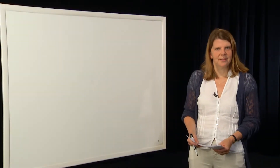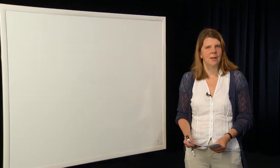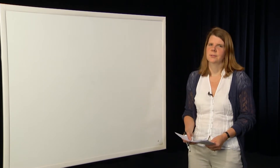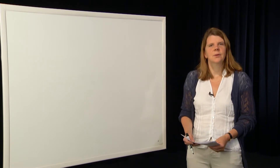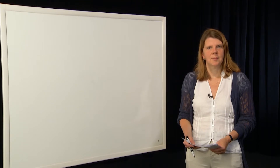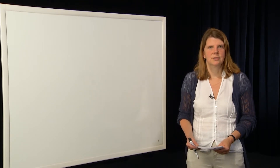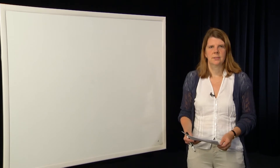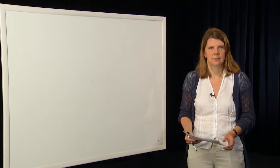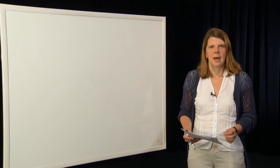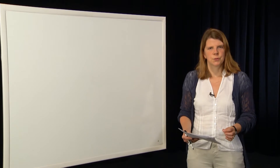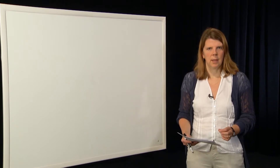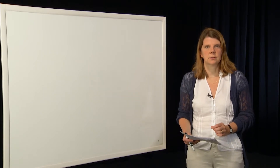Hi, my name is Claire Tomlin, and this is Module 5 in our series in the course 221A, Linear Systems at Berkeley. Today we're going to be talking about matrix representations of linear maps. The single most important thing to take out of this module is how to construct a matrix representation of a linear map between finite dimensional vector spaces.